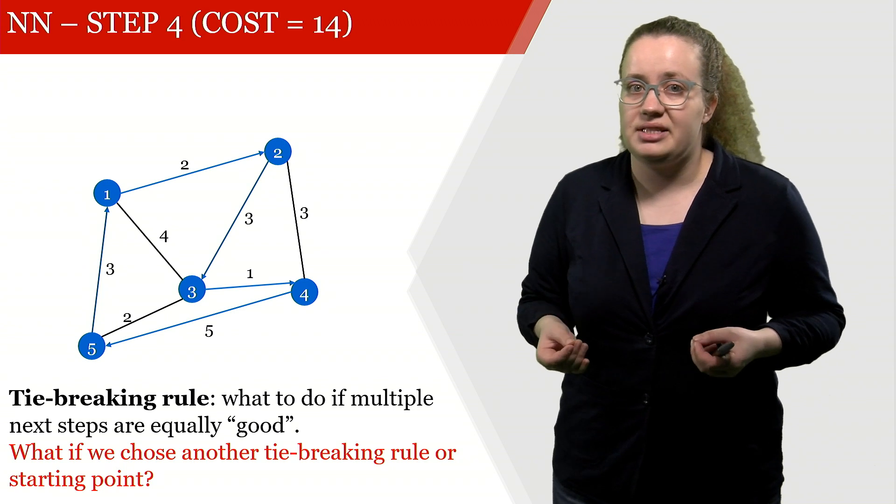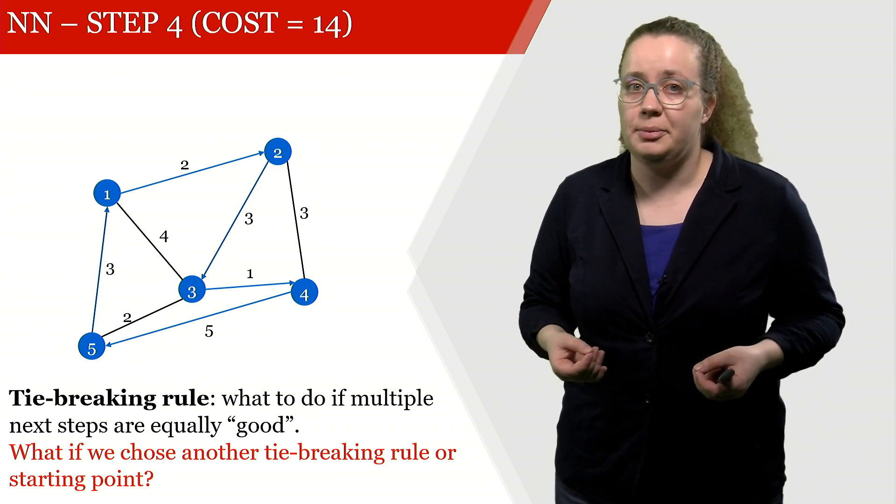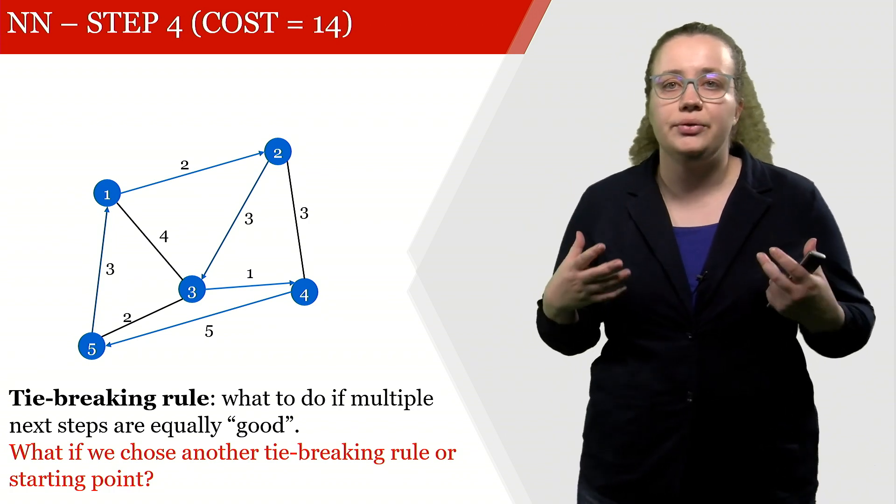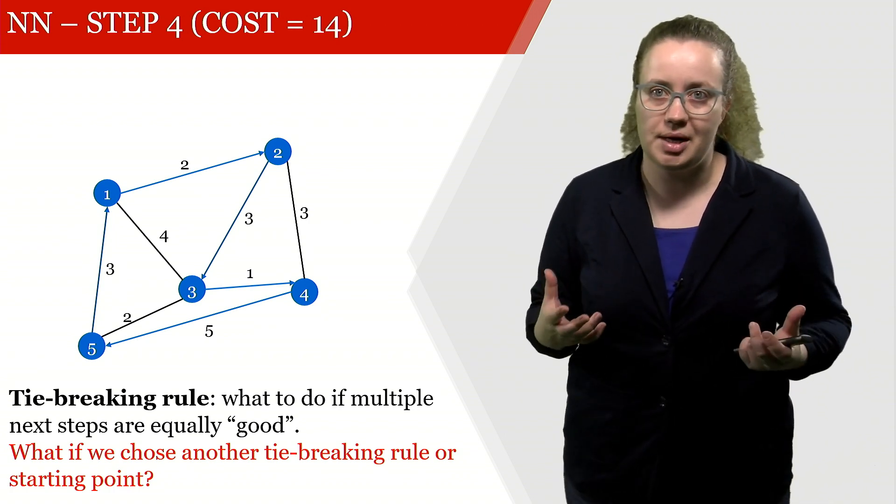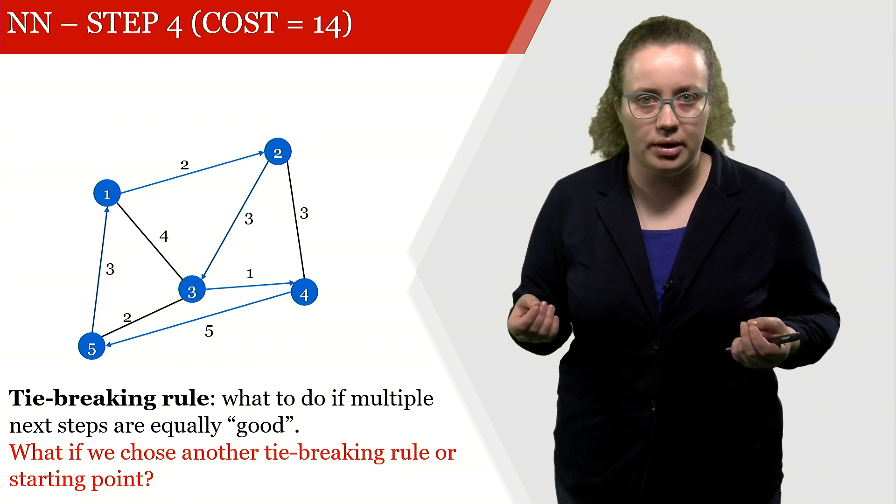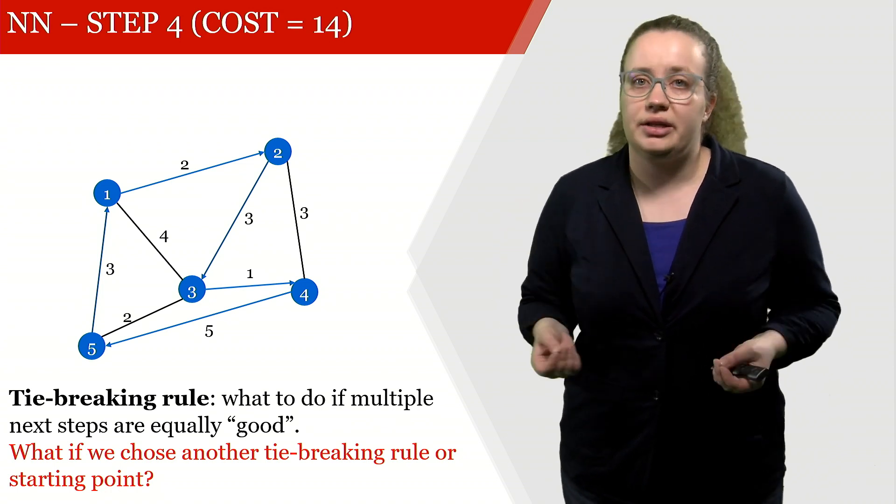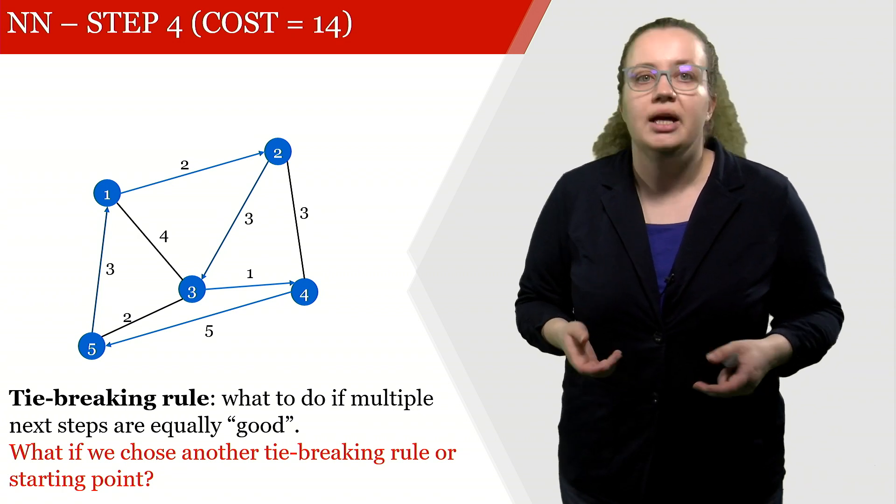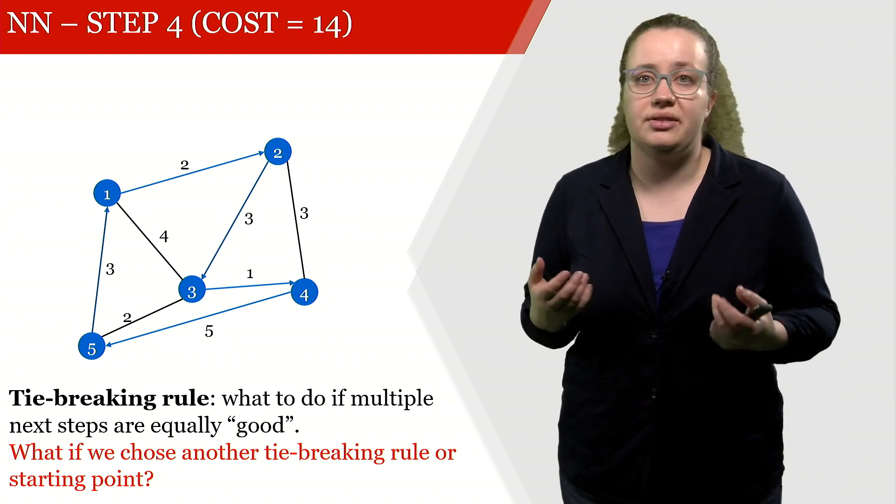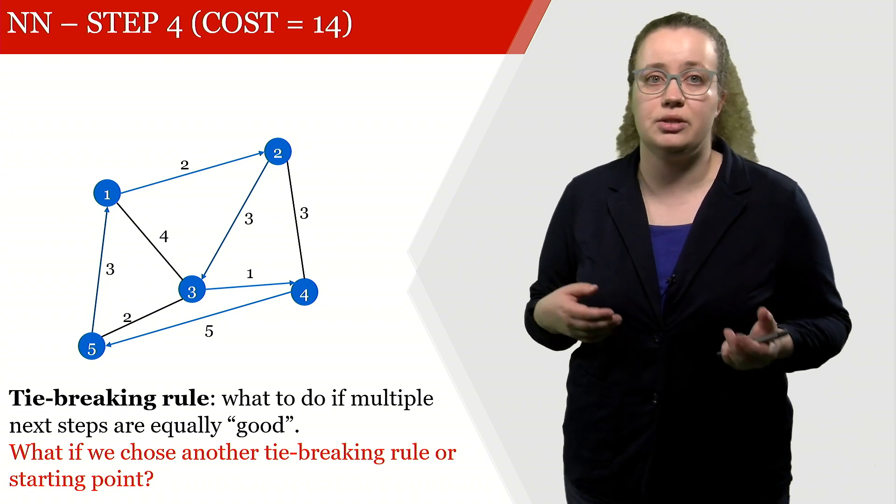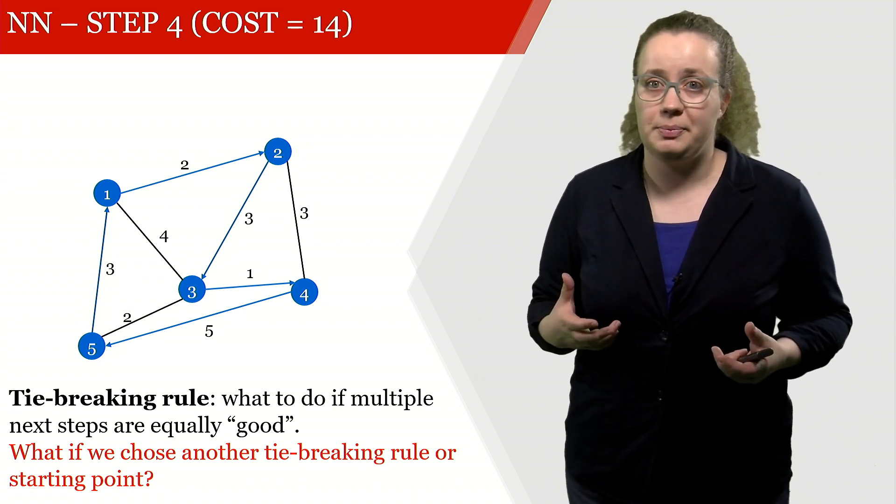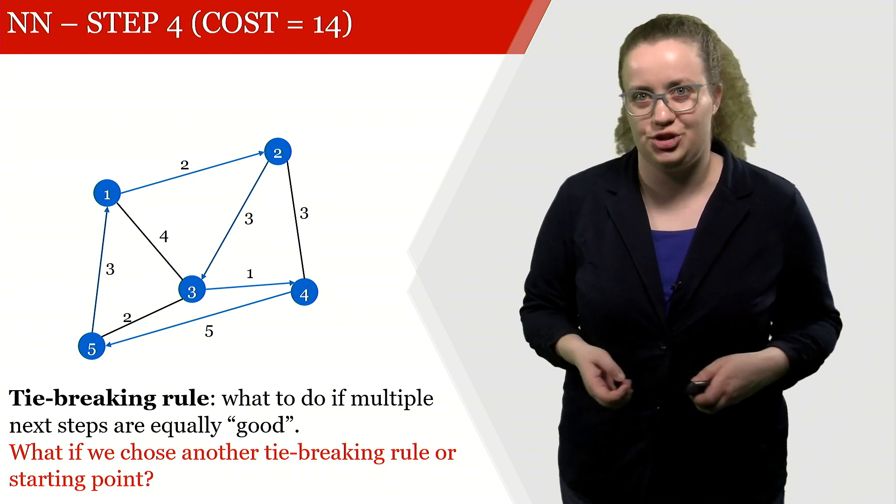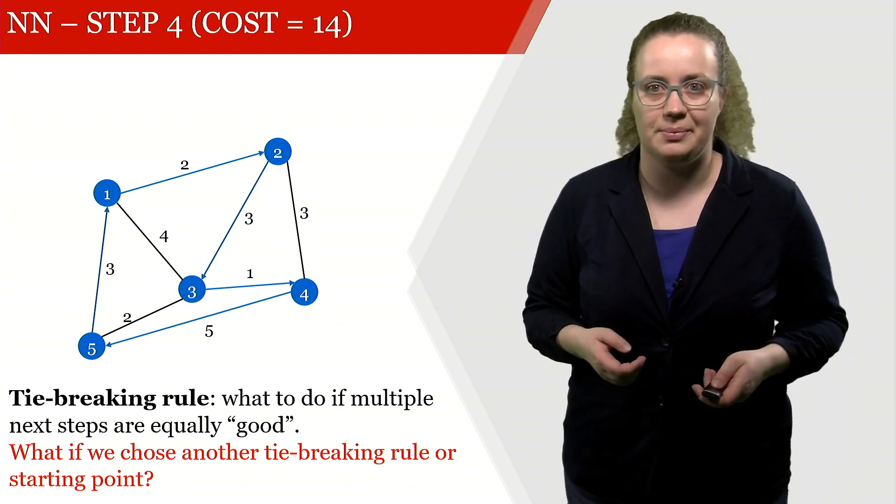Now let's look back at the tie-breaking rule. We looked at the tie-breaking rule to always go to the lowest index. That of course is by far not the only tie-breaking rule that we can come up with. What I would like you to look into is what happens if we choose another tie-breaking rule. The same also holds if we choose another starting node. If we don't start at node number 1 but start at node number 3, our route might be completely different. What I would like you to look into is what happens if we choose different starting nodes and different tie-breaking rules.